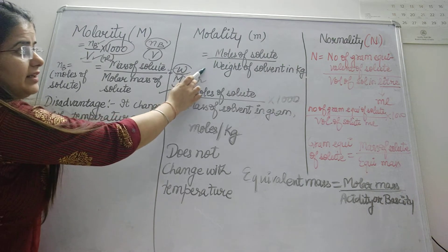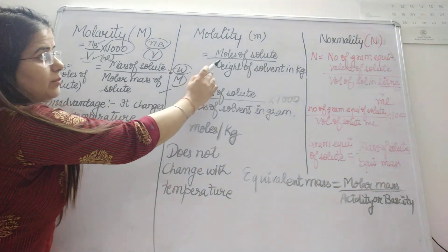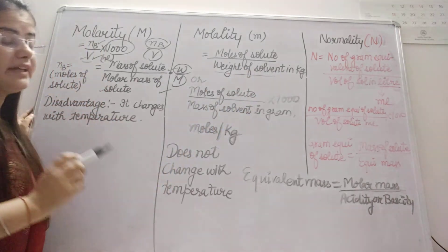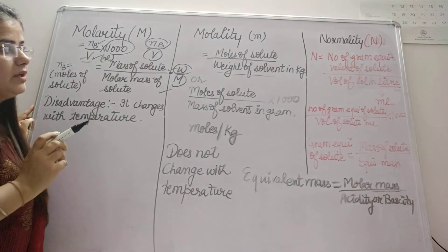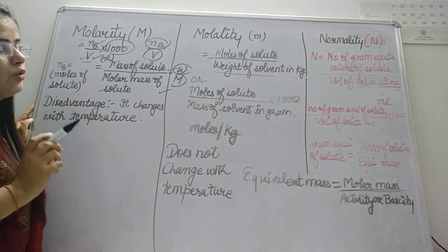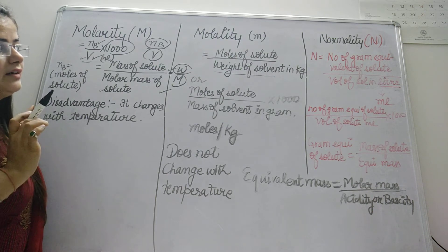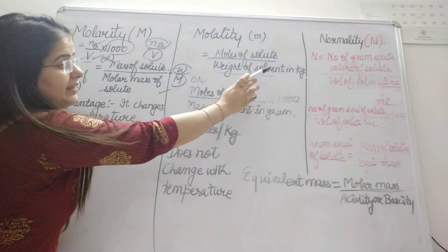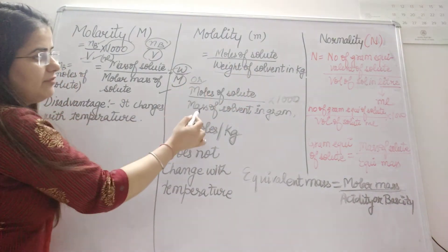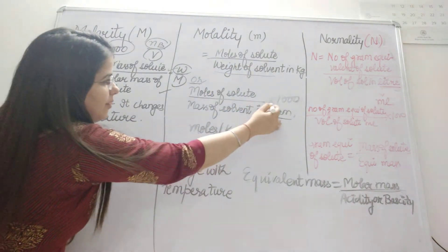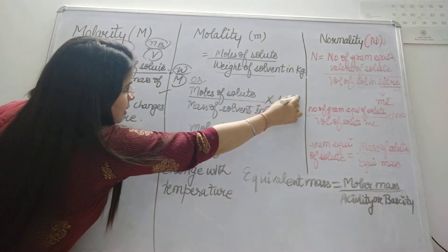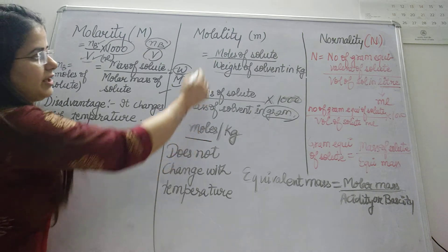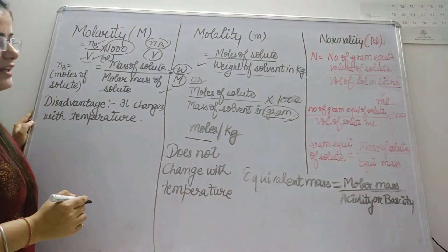And if you talk about molality, it equals the number of moles of solute divided by weight of the solvent in kilograms. Or if mass of the solvent is in grams, then you need to multiply it with 1000. The unit will be moles per kg.